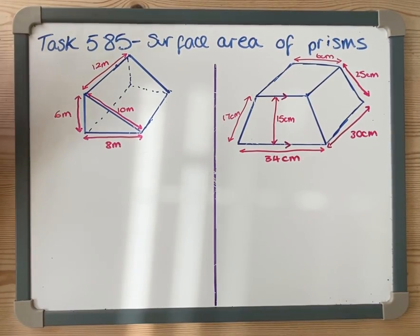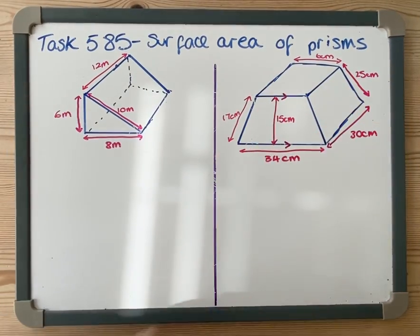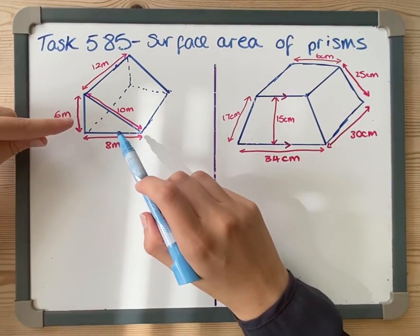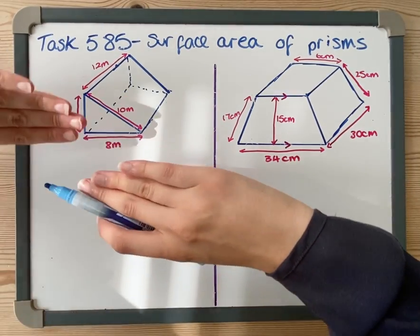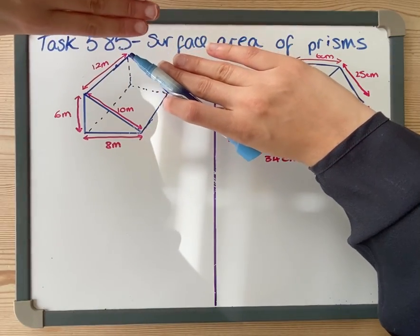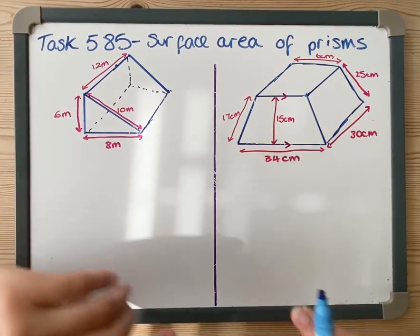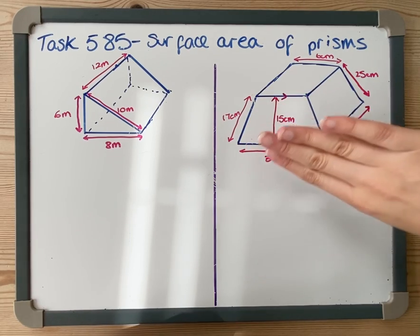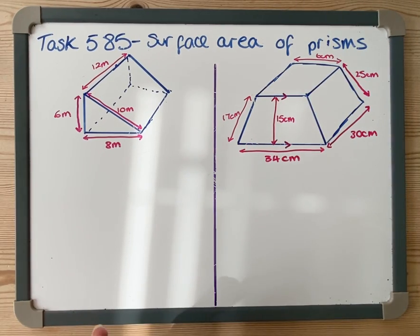We are working out the surface area of both of these prisms. The first thing to think about is what is a prism? A prism is something that has a constant cross-section. So this triangle here runs through the whole shape, and that triangle at the other end will be exactly the same. This trapezium here will run through the whole shape and be the same on the other side.